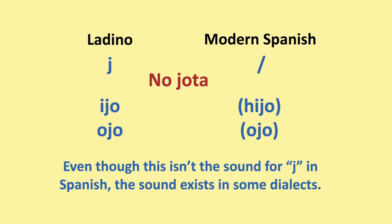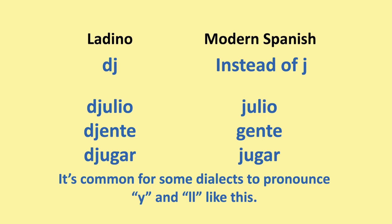Even though this isn't the sound for J in Spanish, the sound exists in some dialects. In Ladino, the DJ sound is pronounced like the J in 'judge'. For example, 'julio' instead of 'julio', 'gente' instead of 'gente', 'jugar' instead of 'jugar', which means July, people, and to play. It's common to find this pronunciation at the beginning of words where the modern Spanish equivalent would have a Jota. It's also common in some dialects of modern Spanish to pronounce Y and double L like J.